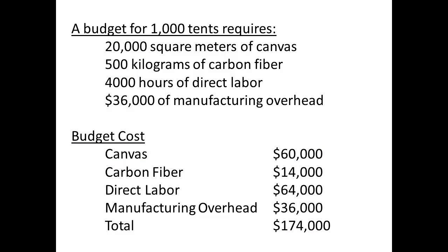Using these standard costs, we can draw up budgets for the production of a particular quantity of our good. If we expect to produce 1,000 tents, then we expect the canvas used to cost $60,000, the carbon fibre $14,000, and so on.